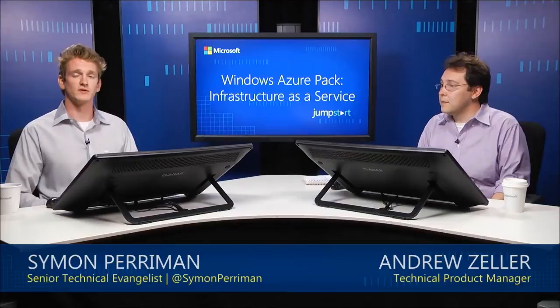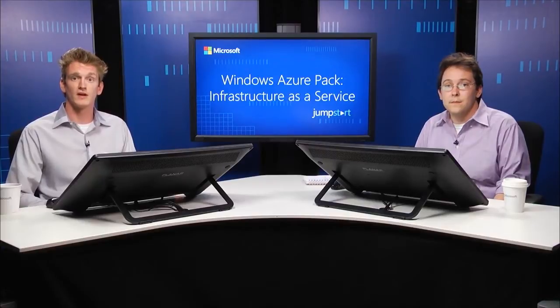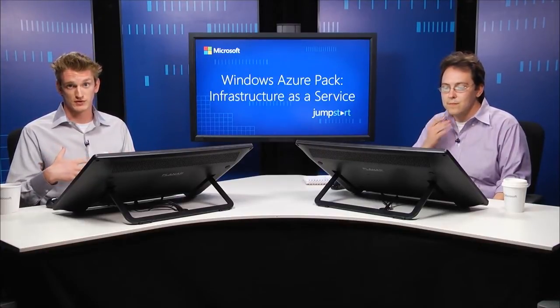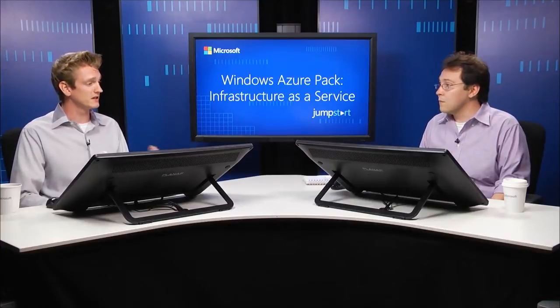Welcome back to the Windows Azure Pack Jumpstart, focusing on infrastructure as a service. I'm Simon Perryman, Technical Evangelist, and I'm joined this time by Andrew Zeller. Where we are today, we're really going to be focusing in this module on actually integrating the fabric. We've done the initial deployment and understand those setup requirements. Now we're going to focus on deploying our core set of infrastructure components: the storage, the network, the clusters, and the compute resources.